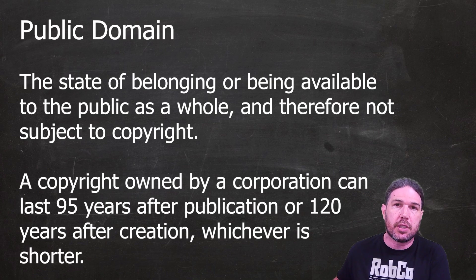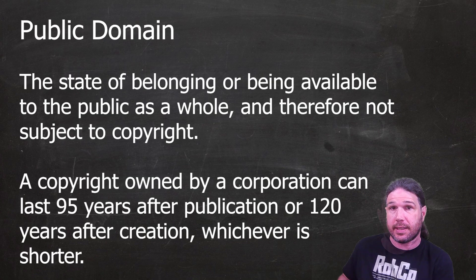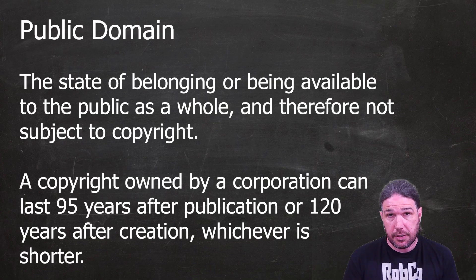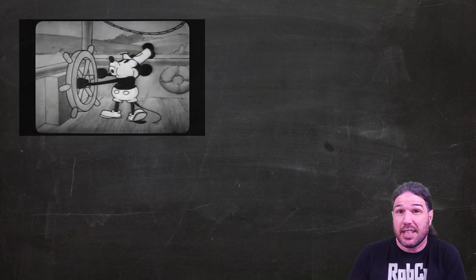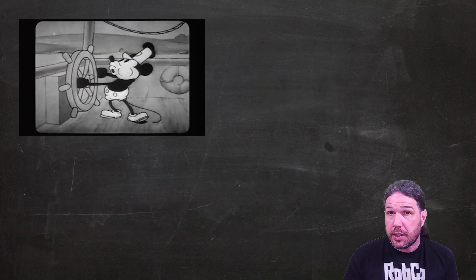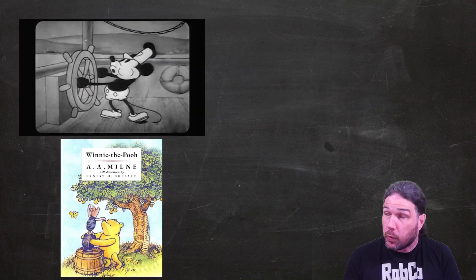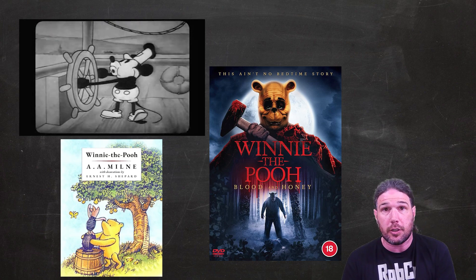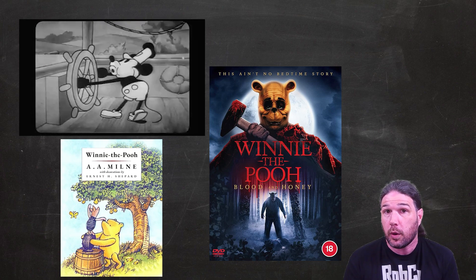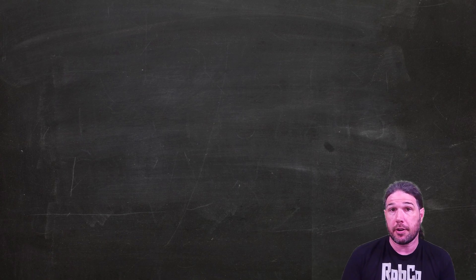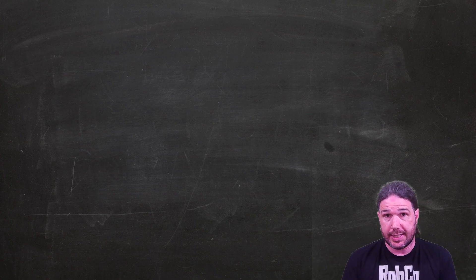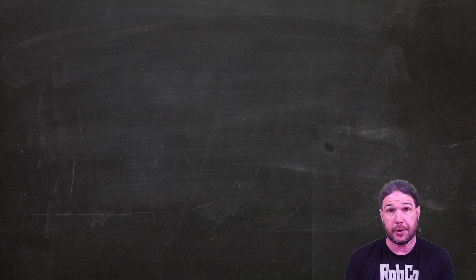Anyone can use public domain works or modify them for any reason. You may have heard recently of certain characters being put in the public domain, like Disney's Steamboat Willie as well as the original Winnie the Pooh, which has spawned several derivative works. Public domain is a fairly simple and understandable idea: 70 years after an author's death, their work is free for all.